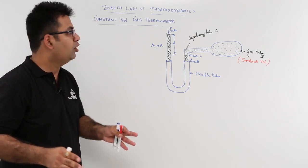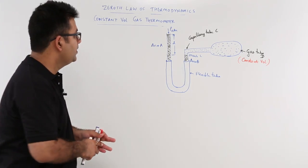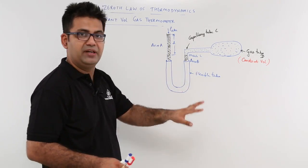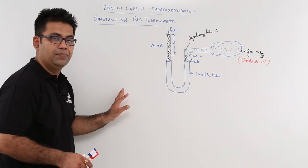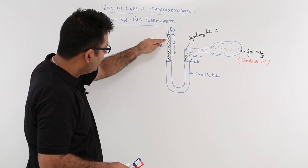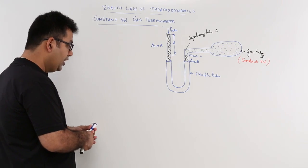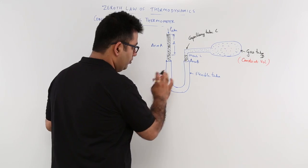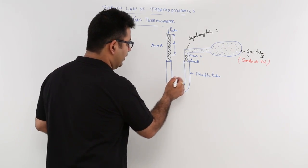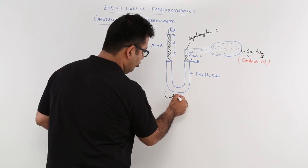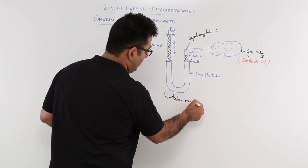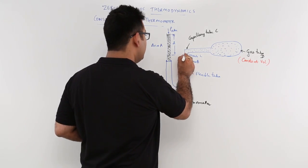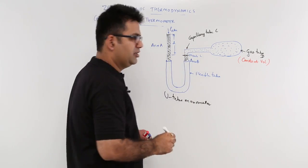First of all, let us look at the schematic of the whole thermometer. There are two arms: arm A and arm B. In both the arms we have a liquid called mercury — this black colored hatching is mercury. You have a flexible tube which is wrapped around these two arms, making it a U-tube manometer. There is a marking on arm B which is mark L.